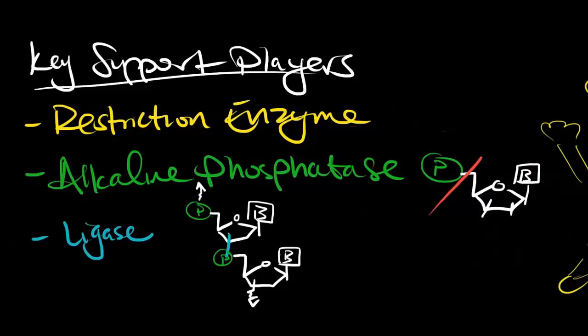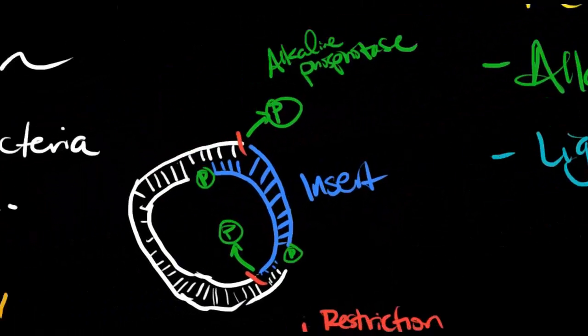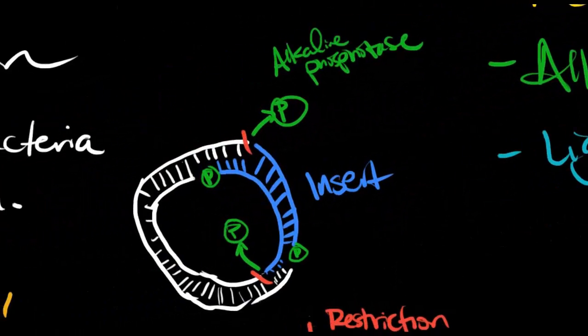It's possible that the sticky ends will come together, but won't actually stay together because ligase, which is our last supportive player, needs those phosphate groups to permanently fix the nick. The phosphate group it does end up using comes from the insert, which hasn't been dephosphorylated.